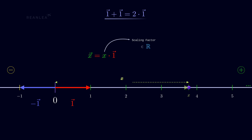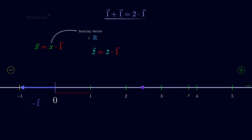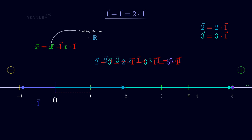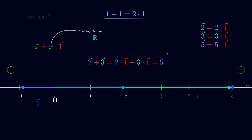To add two vectors, let us consider vector 2 and vector 3. We reposition vector 3 by starting it at the terminal point of vector 2. The addition gives us (2 plus 3) times the unit vector, which is 5 times the unit vector. Since 5 times the unit vector is vector 5, the result of the addition is vector 5.